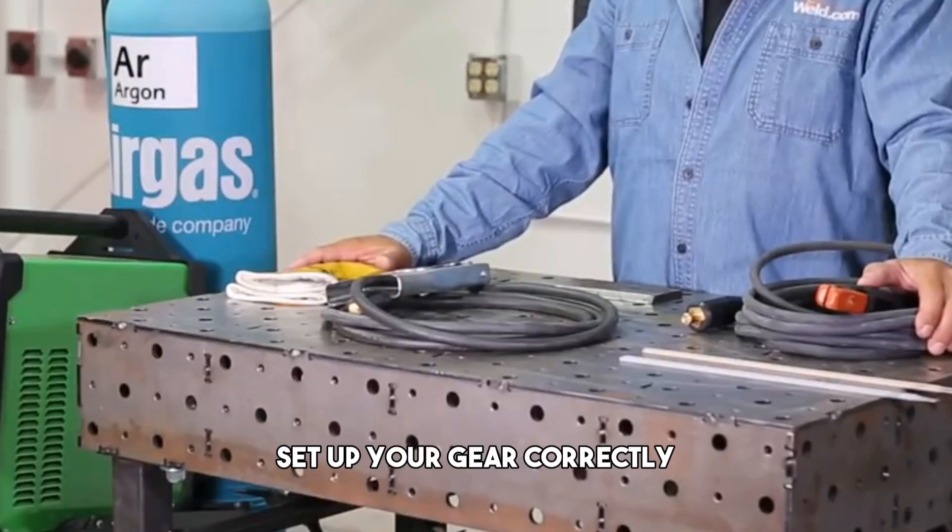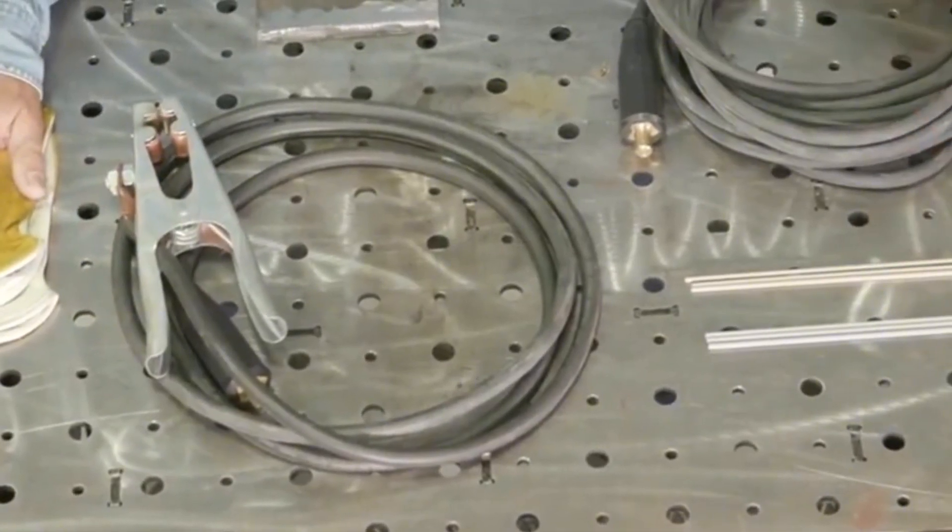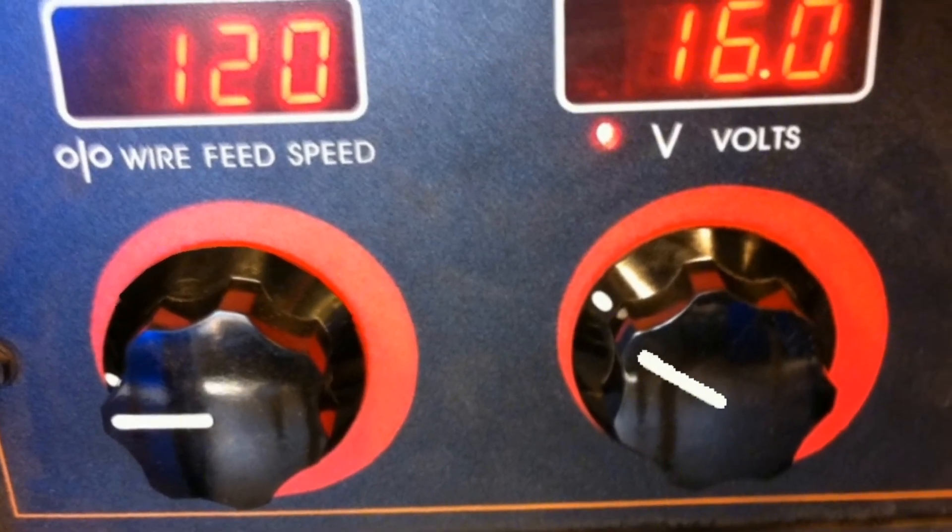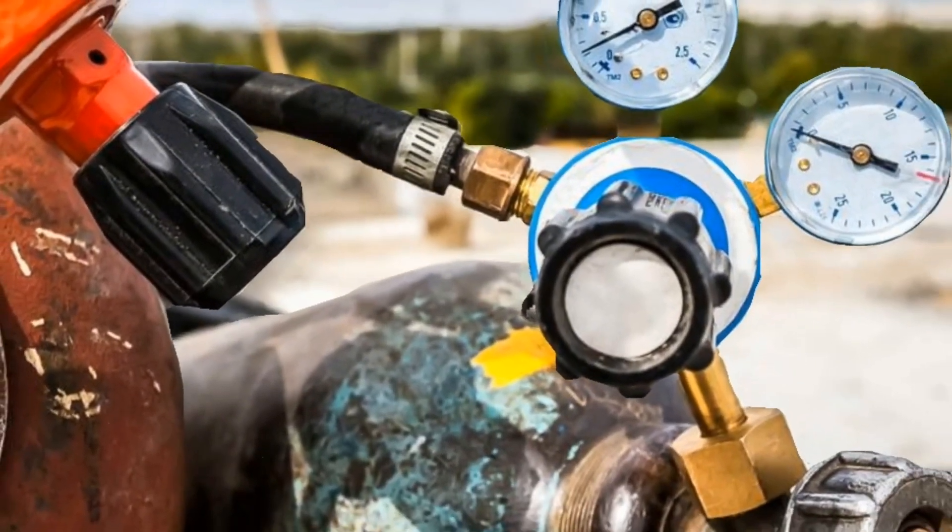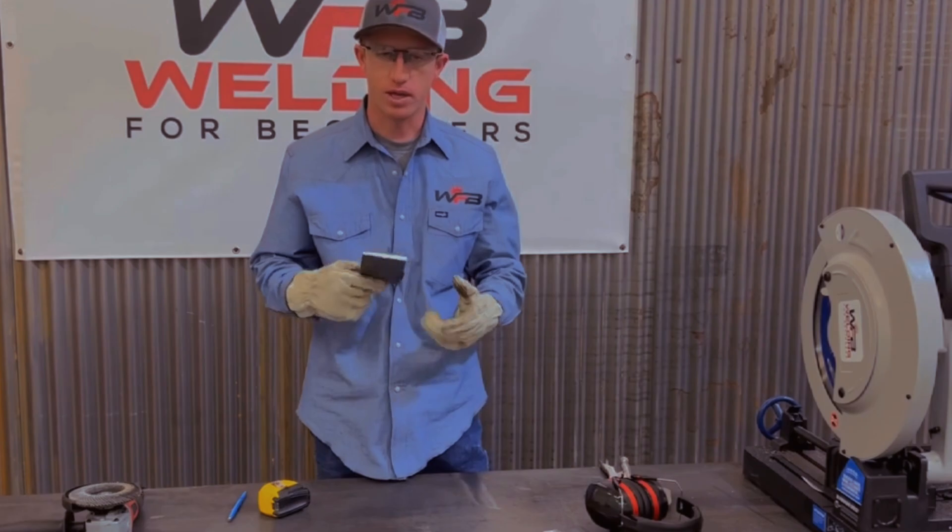Last but not the least, set up your gear correctly, which involves following the manufacturer's instructions and adjusting the voltage, amperage, gas flow, wire feed, and other settings according to the welding method and material you are using.